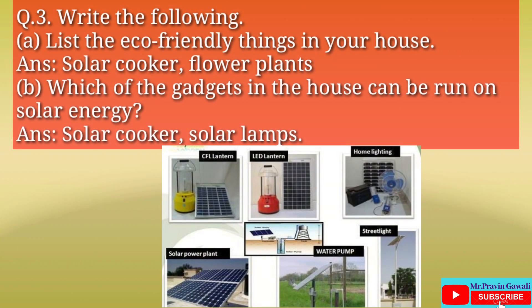Question number three, part A: List the eco-friendly things in your house. The answer is solar cooker and flower plants. Students, you can write the answer according to your own opinion.